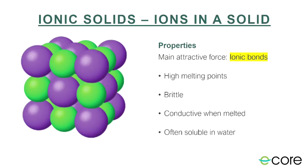First, ionic solids. Ionic solids are made of a bunch of ionic compounds. If we imagine that our purple spheres here represent our cations and our green spheres represent our anions, then we have alternating positive and negative charges — and that's what holds these solids together. They're held together by ionic bonds, so that's the main force of attraction.